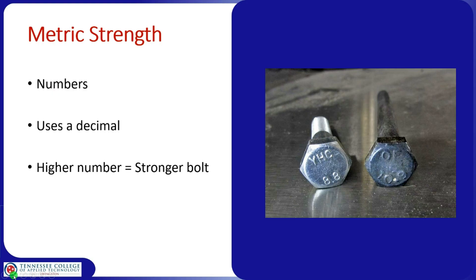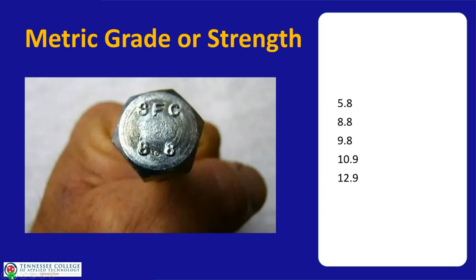For metric bolts, the strength is in the numbers — sometimes with a decimal between digits like 8.8 or 10.9, sometimes with just a space. The higher the number, the stronger the bolt, just like standard bolts. Common metric strengths include 5.8, 8.8, and 9.8, with 8.8 being very common. In the automotive industry, you'll see up to 12.9 — going up in numbers means stronger.